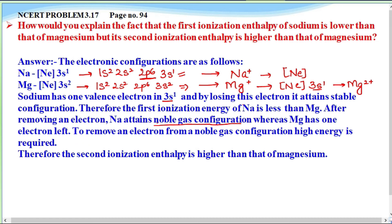High energy is required to remove an electron from a noble gas configuration. Therefore, the second ionization enthalpy of sodium is higher than that of magnesium.